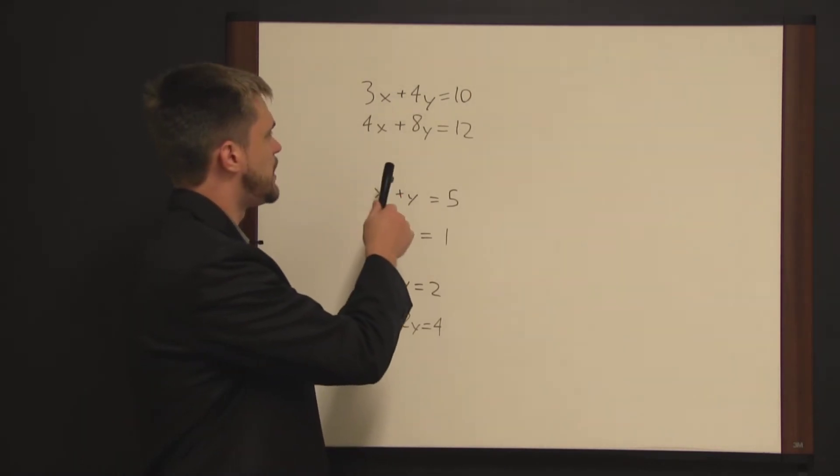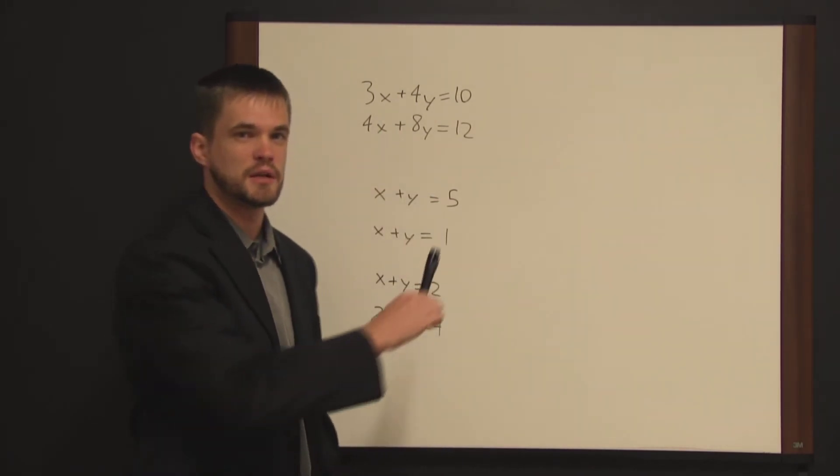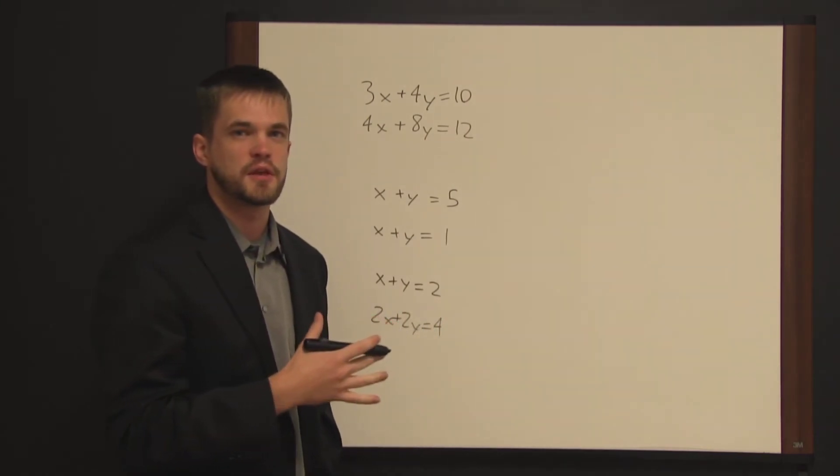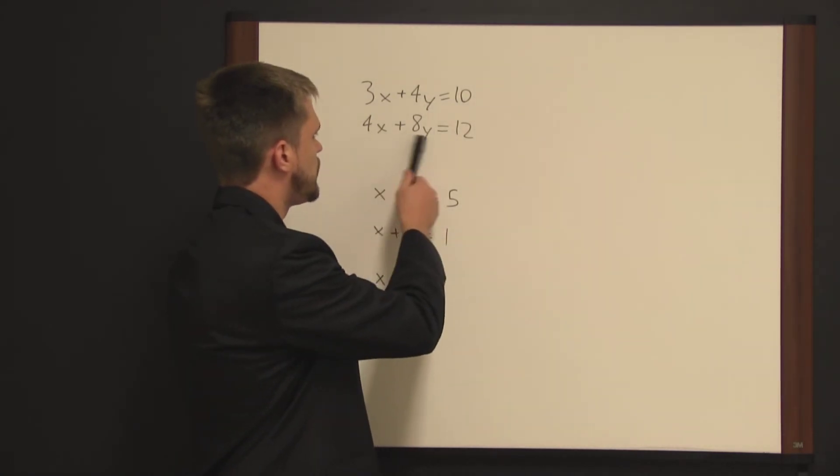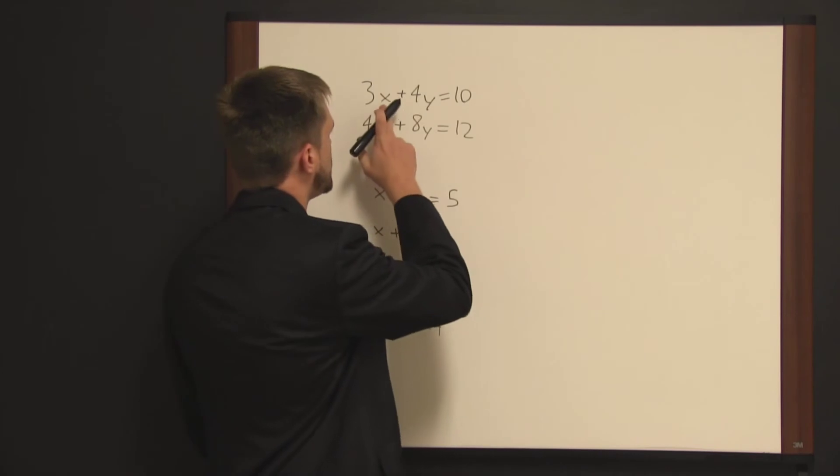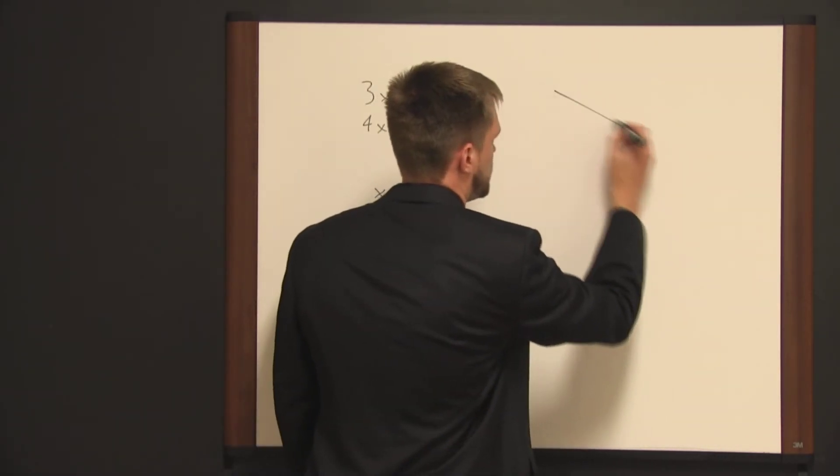One way to think about solving systems of equations, at least linear equations like this, is to think about it graphically. The definition of what we're looking for here can be shown very easily on a graph. Let's say that this first line, the graph looks like this.